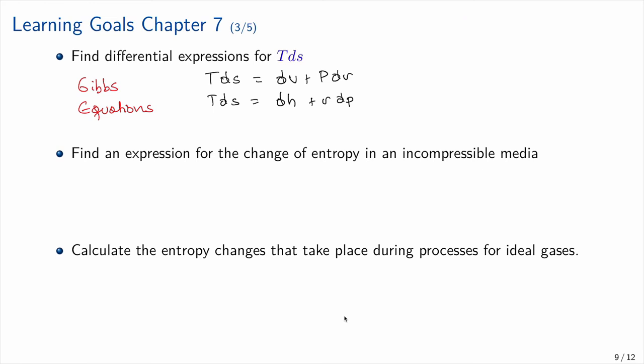For incompressible media such as solids and liquids, the entropy change is: ΔS = c_avg × ln(T2/T1). For ideal gases, the general expression derived from the first Gibbs equation is: S2 − S1 = ∫cv dT/T + R ln(V2/V1).